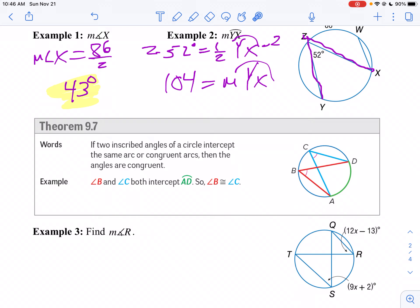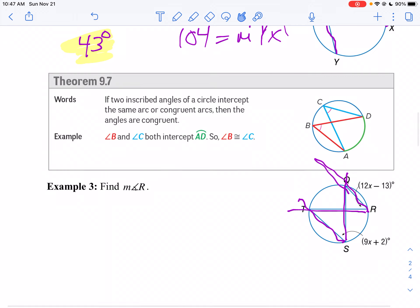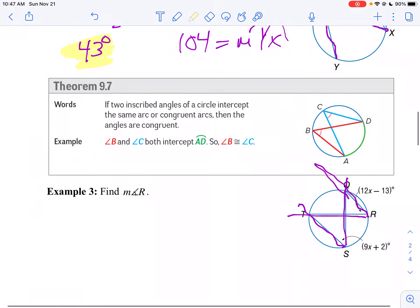So let's take a look at example three. I want to find the measure of angle r. Notice angle r subtends arc QT. Look at angle s. That also subtends QT, doesn't it? So they go through the same arc, so that means those angles must be congruent. So in other words, 12x minus 13 must equal 9x plus 2.